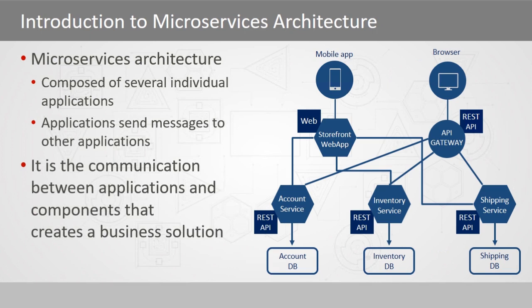As in the example here, we could have an account service that talks to an inventory service that talks to some kind of a gateway, and then eventually we want to talk to some kind of a shipping service. A consumer comes along and simply wants to know whether a product was shipped or not. It is a combination of these different individual services communicating with each other that provides that answer to our customer.